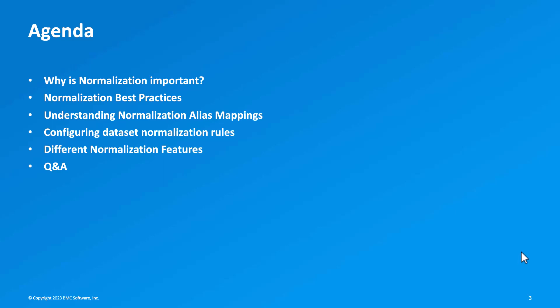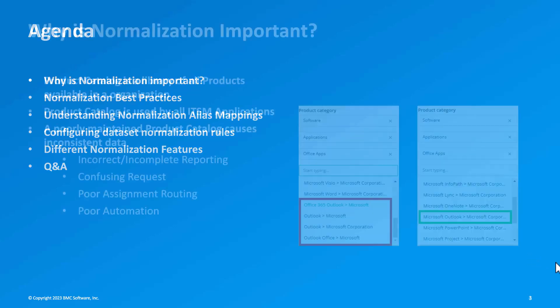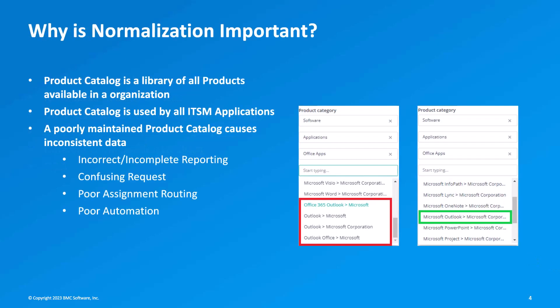This is our agenda for today. We'll be discussing why normalization is important, then we'll talk about normalization best practices. I'll show you how to create normalization alias mapping in CMDB, then I'll show different normalization rules and features available in CMDB, and at the end we'll have a Q&A session.